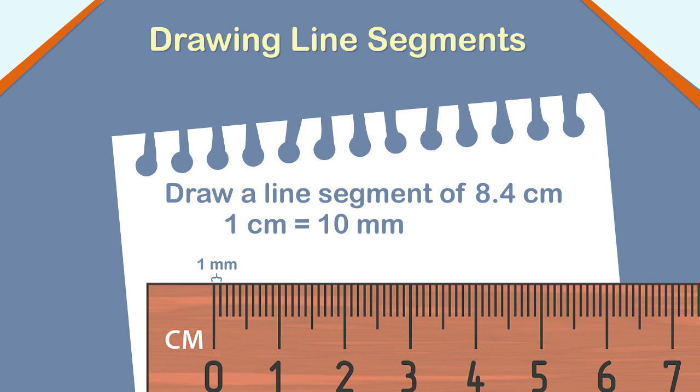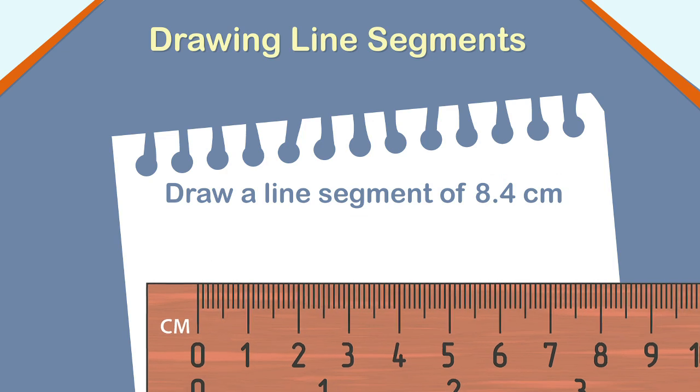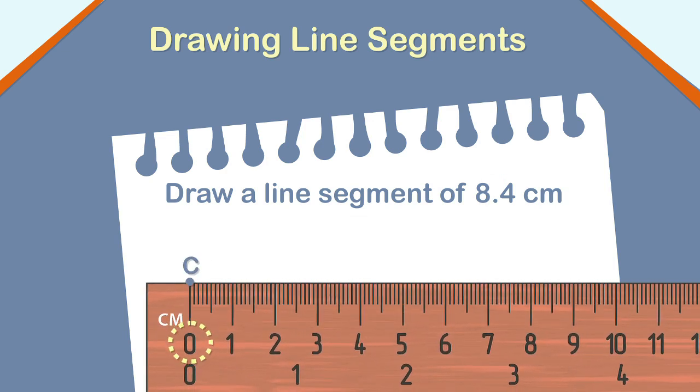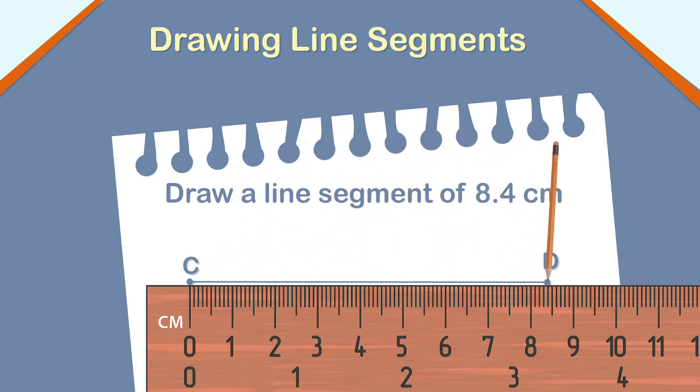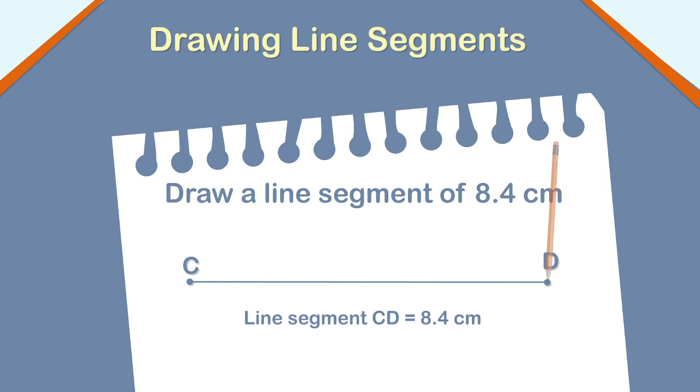8.4 centimeter is 8 centimeter and 4 millimeters. First, mark point C against 0 centimeter. Count up to 8 centimeter on the ruler to show 8 centimeter and count ahead 4 small divisions after 8 to show 8.4 centimeter. Mark the point and name it as point D. So, the line segment CD measures 8.4 centimeter.